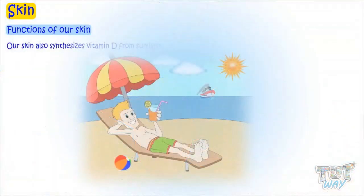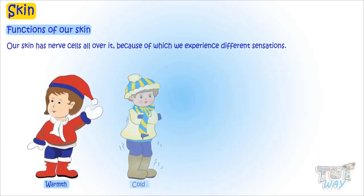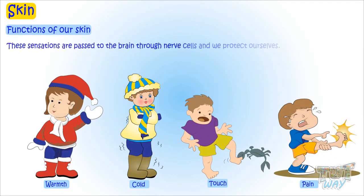Our skin also synthesizes vitamin D from sunlight. Our skin has nerve cells all over it, because of which we experience different sensations like warmth, cold, touch, and pain. These sensations are passed to the brain through nerve cells, and we keep ourselves protected.